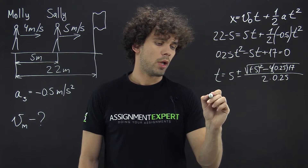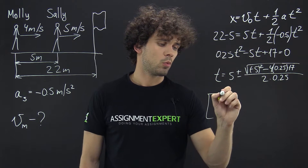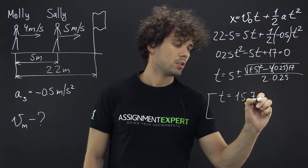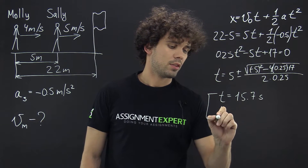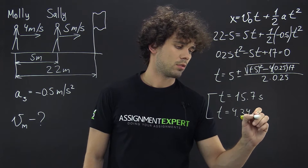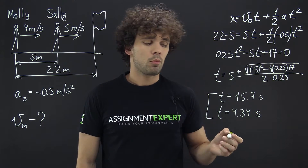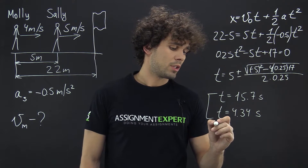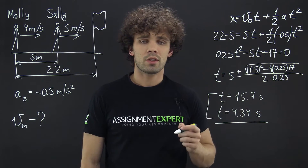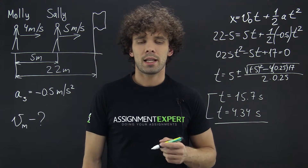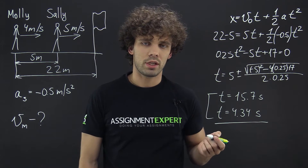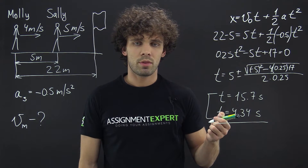We get two results: T equals 15.7 seconds and T equals 4.34 seconds. We use the smaller value, 4.34 seconds, because the larger value represents the time for Sally to finish the race, change direction, and then finish the race again. So we stick with T = 4.34 seconds.